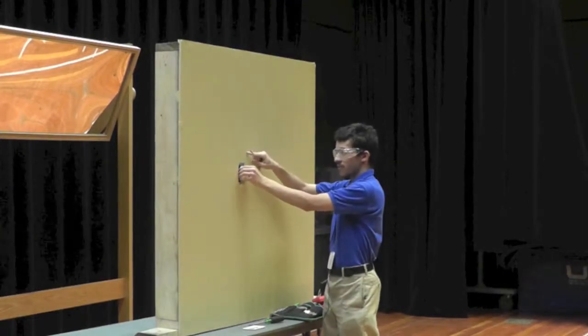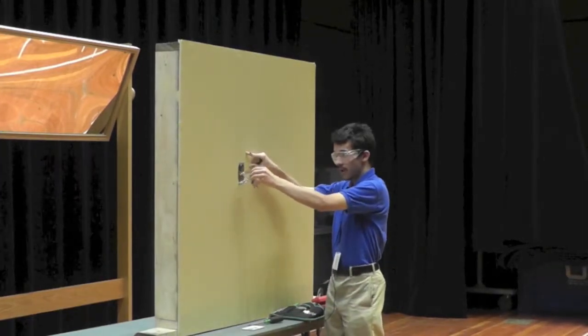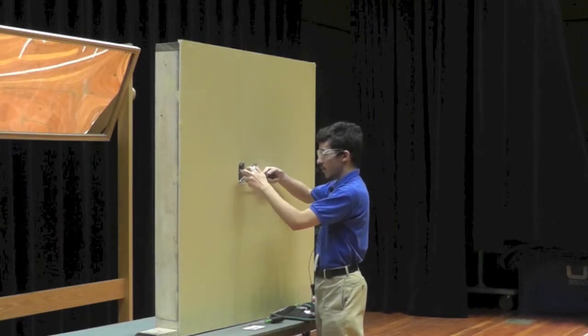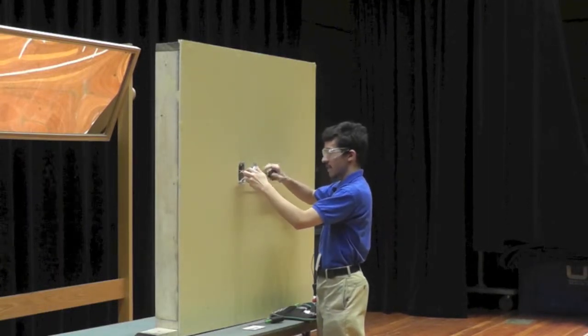Next, we will remove the receptacle straight out of the outlet box and detach the wires from the terminal screws on the side.